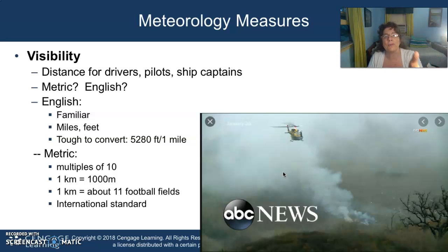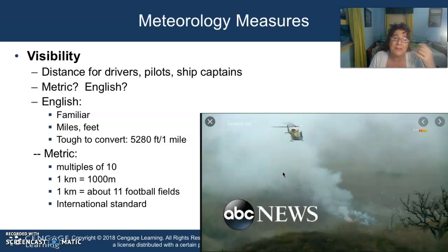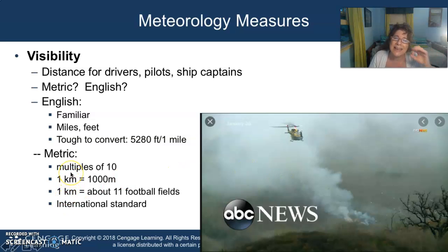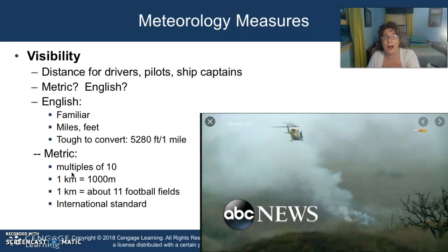The English system is more familiar to you — you know miles, you know feet. But it's very tough to convert, especially converting feet to miles: 5,280 feet per mile. That's a really hard division to do. It's a really hard multiplication to do if you need to do it times 23 miles — how many feet is that? When it comes to metric, it's not as familiar to you, but it's all in multiples of 10, so you go back and forth with your decimal point.